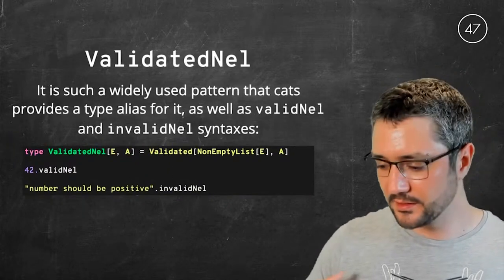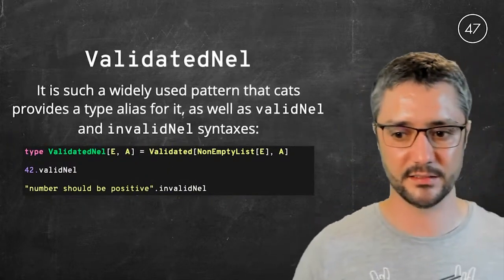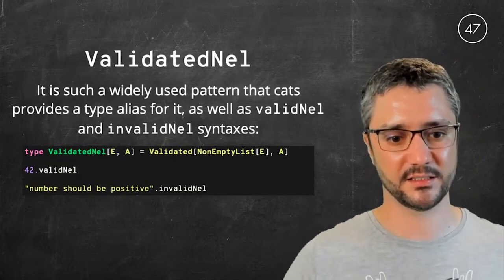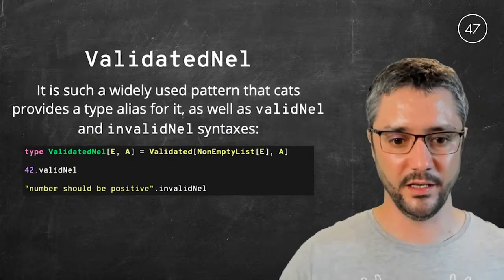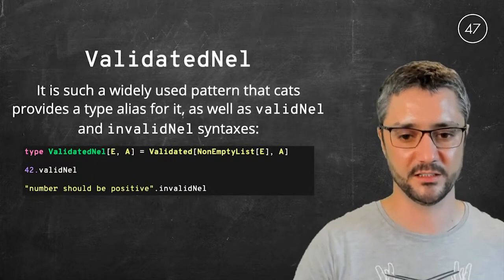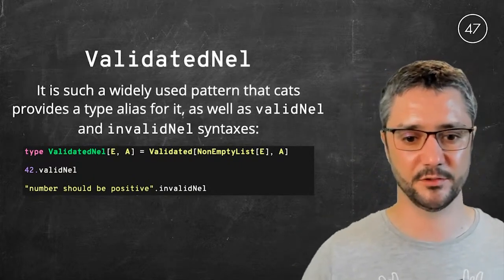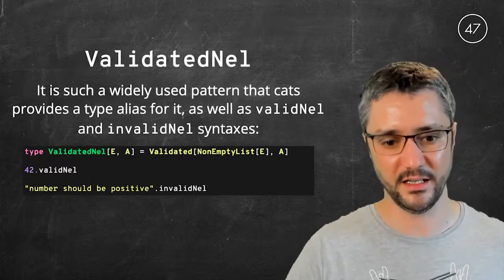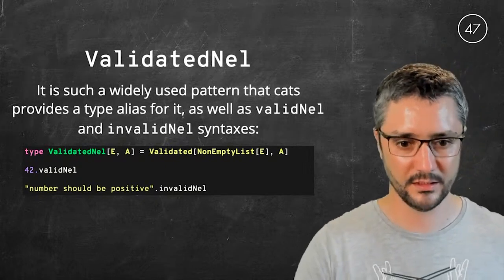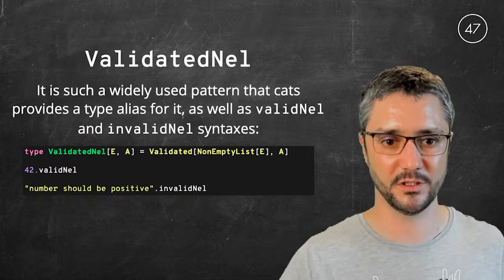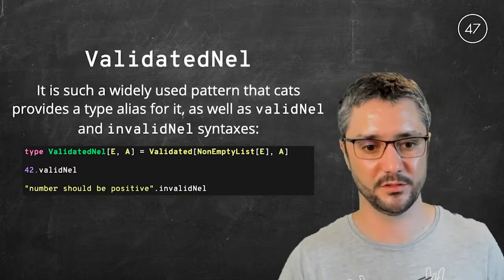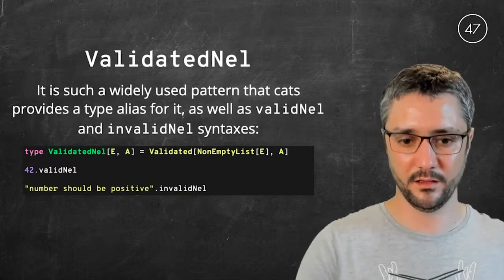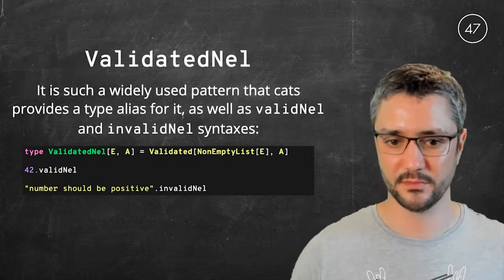And it's so often used that cats also provides us with some shortcuts for that. The type alias ValidatedNel of E and A is basically a validated of non-empty list of E and A. And we also have a syntax to lift a value into a ValidatedNel with the validNel and invalidNel syntaxes. So that's it. Whenever I want to use an error type that is not a semigroup, I just use ValidatedNel instead of Validated and I'm good to go. And in the end, I will get either the result I was looking for, or a non-empty list of errors. That's exactly what I wanted.